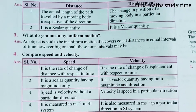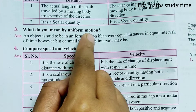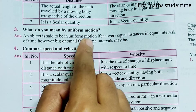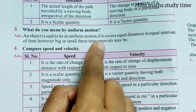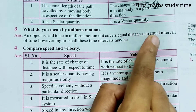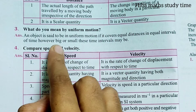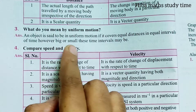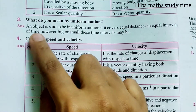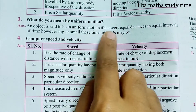Third question: What do you mean by uniform motion? An object is said to be in uniform motion if it covers equal distance in equal intervals of time, however big or small these time intervals may be. An object is said to be in uniform motion if it covers equal distance in equal intervals of time.